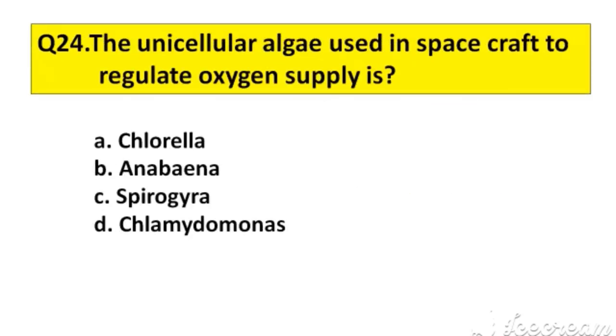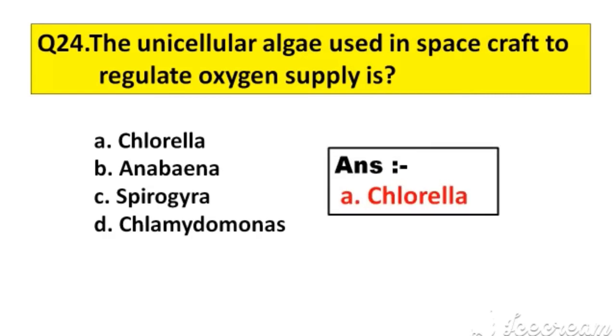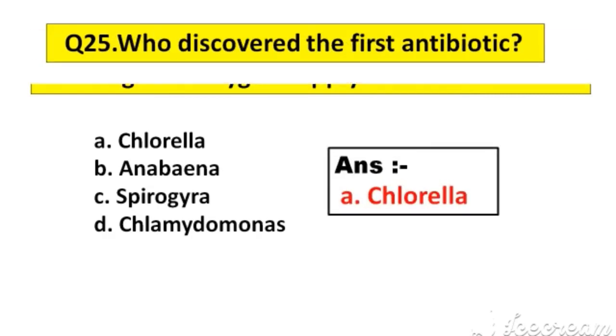Question number 24. The unicellular algae used in spacecraft to regulate oxygen supply is: A. Chlorella, B. Anabaena, C. Spirogyra, D. Chlamydomonas. The answer is option A, Chlorella.